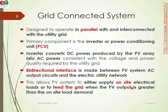The grid connection system is designed to operate in parallel and interconnected with the grid. The primary component is the inverter or Power Conditioning Unit, also known as PCU. We can use the power conditioning unit to manage the output.